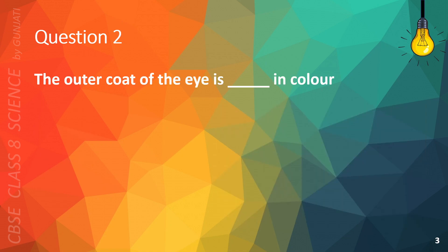Question 2. The outer coat of the eye is blank in color. A. White, B. Black, C. Green, or D. Brown.